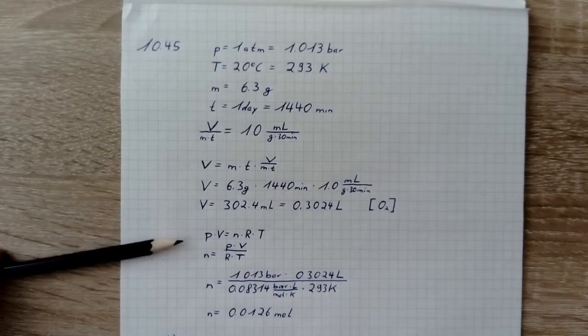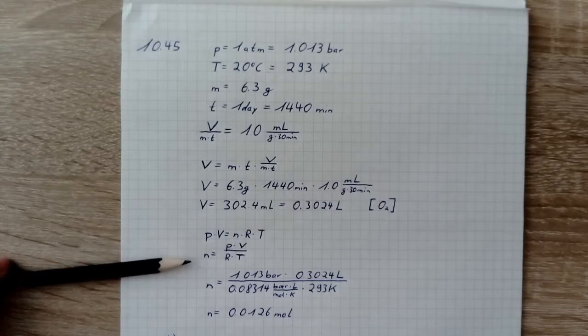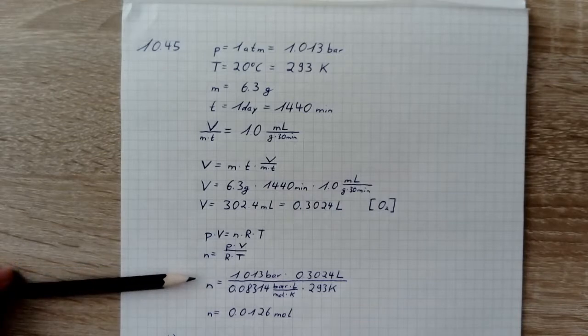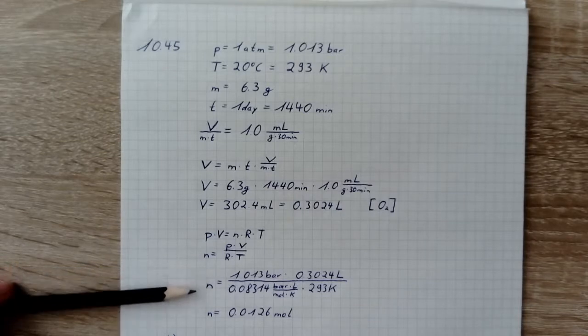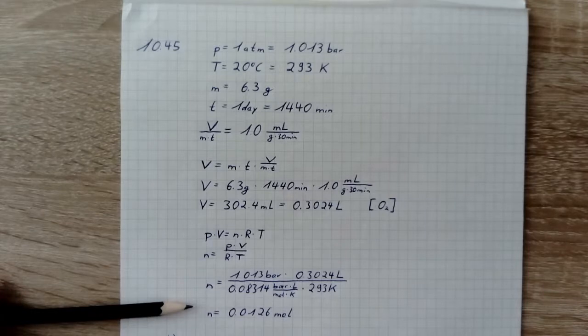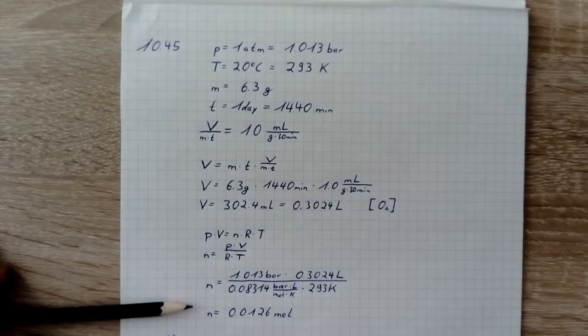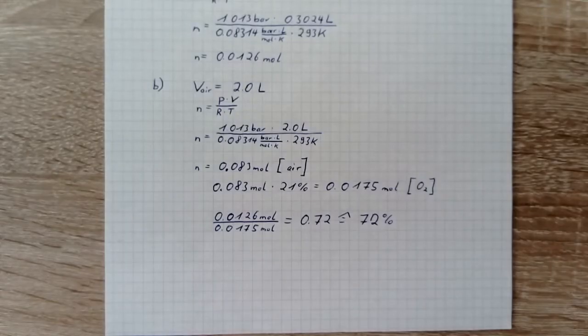Now we can use this formula to get the moles of oxygen. We convert the formula like this and insert the values. So we get 0.0126 moles of oxygen which is the result of A. Now comes B.